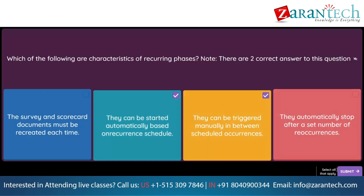Question. Your customer stores on-time delivery data from an external system in SAP Ariba using a custom fact table. How do you use the data in an SAP Ariba supplier performance management project? Option 1: Add a link to the custom fact report on the Documents tab. Option 2: Add a question about the data into a survey. Option 3: Add the custom fact report as an informational item in a scorecard. Option 4: Add a report-based KPI into a scorecard.